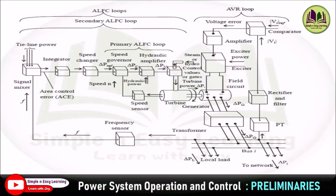We start with the primary ALFC loop, which consists of a speed sensor, speed governor, hydraulic amplifier, and finally a control valve. In the primary ALFC control loop, the speed sensor senses the speed of the turbine. This speed is compared with the reference speed, and the differential speed is sensed by the speed governor. The reference speed is compared with the actual speed from the speed sensor, and the differential speed is sent to the hydraulic amplifier. The speed governor controls speed corresponding to the differential speed by closing and opening of the control valve. If the differential speed is low, the control valve is opened so that steam flows at high speed, thereby increasing the speed of the turbine.